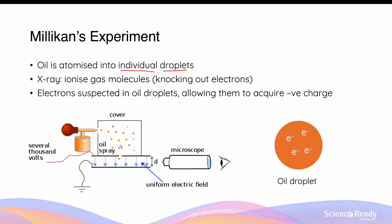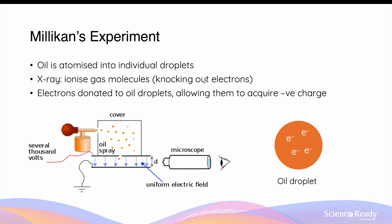When an oil droplet falls through into the bottom chamber under the influence of gravity, X-rays are used to ionize gas molecules by knocking out their electrons. These electrons from gas molecules are then donated to the oil droplets that manage to fall through into the second chamber. When oil droplets acquire these electrons, they become negatively charged. For example, if an oil droplet acquires 4 electrons, then it will acquire a charge of exactly 4 electrons.